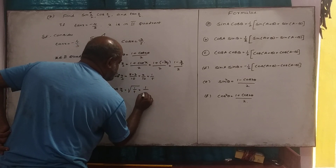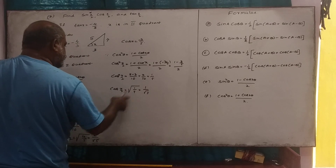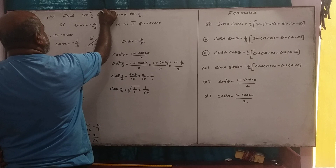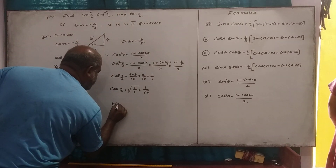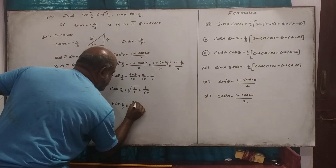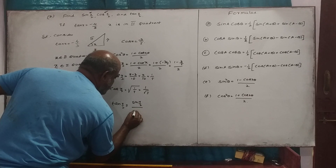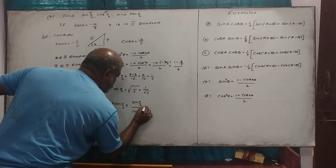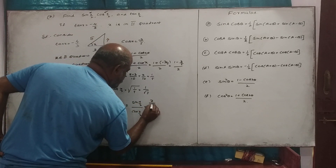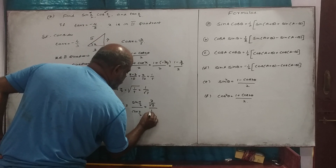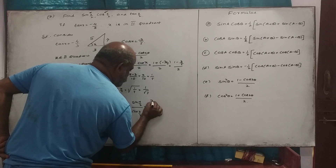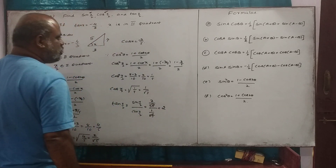Then cos x by 2 is root of 1 by 5, which equals 1 over root 5. And cos squared x by 2 is 1 plus cos x divided by 2, giving 2 divided by root 5. Then 1 plus root 5 divided by 2 gives the final value of cos x by 2.